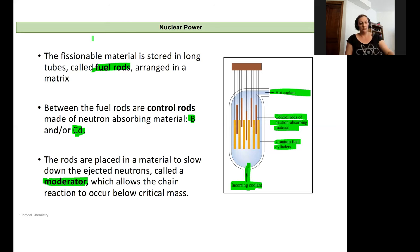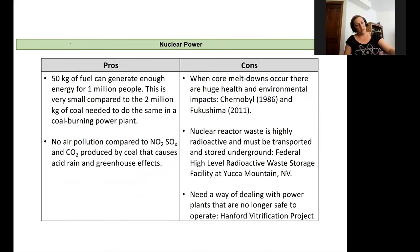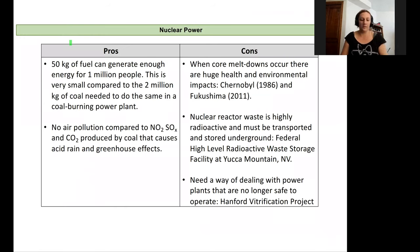Thinking about nuclear power, there are pros and cons. There's some really amazing things about nuclear power. Just 50 kilograms of uranium can generate enough energy for a million people. This is extremely small compared to the millions of kilograms of coal needed to do the same thing. There's no air pollution—no NO2 or sulfoxides and CO2 produced by coal plants that cause acid rain, greenhouse gases, and global warming. That's really attractive about nuclear power.